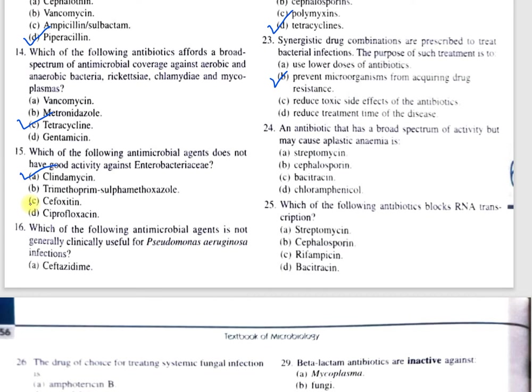Question number 24: An antibiotic that has a broad spectrum of activity but may cause aplastic anemia is — A, cephalomycin; B, cephalosporin; C, bacitracin; D, chloramphenicol. The correct option is D, chloramphenicol. Chloramphenicol is quite effective but is rarely used to treat infections because it causes aplastic anemia.